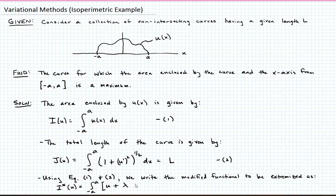1 plus u prime, the quantity squared, to the 1 half, close our brackets, dx. Right? So that's the modified functional that we want to extremize. We'll call that equation 3.